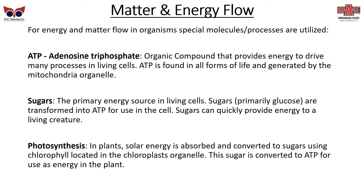In living things, energy and matter flow involves special molecules and processes. The first and most important is ATP — adenosine triphosphate — an organic compound that provides energy to drive many processes of living cells. ATP is found in all forms of life on Earth and is generated by the mitochondria organelle, which is why it's called the powerhouse of the cell. Sugars, primarily glucose, are transformed into ATP for use in the cell. Your body can convert sugar quickly into ATP to give you a quick energy boost.